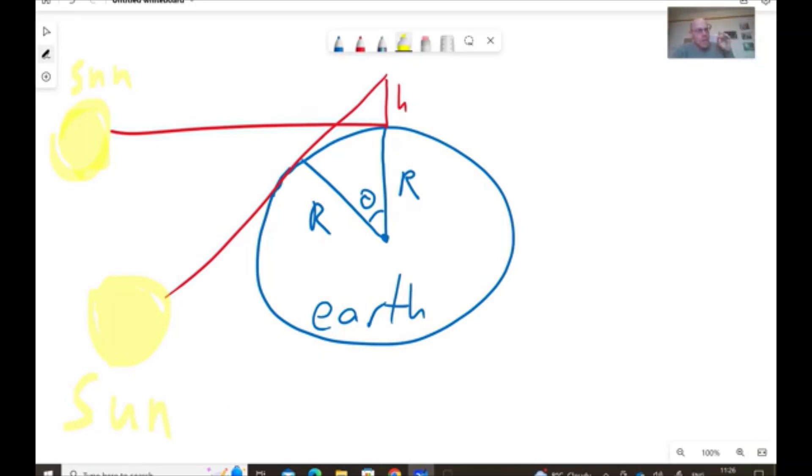So, if we know the height h that we took the drone, let's say 100 meters, and we measure the time between the two sunsets, it can take two minutes. Then, with this data, we can deduce the radius of Earth.